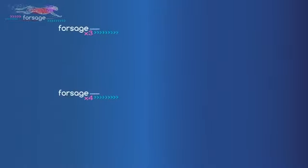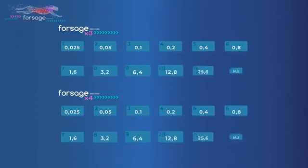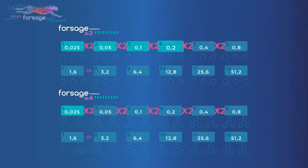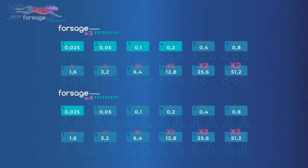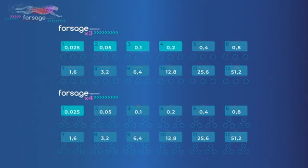Each of two programs, X3 and X4, has 12 slots. They all are identical and work in the same way. Each subsequent slot is exactly two times more expensive than the previous one. Accordingly, income from them are also twice as high. All active slots move and bring your revenue in parallel.